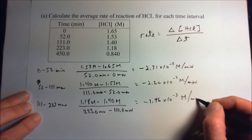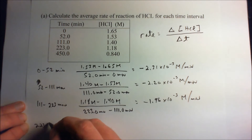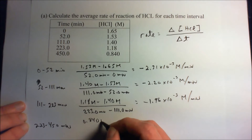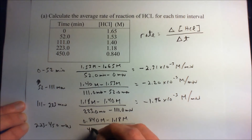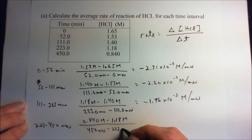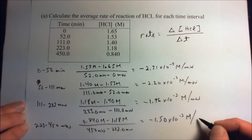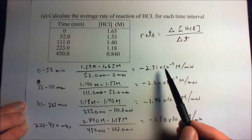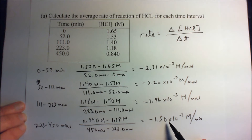Our final interval is 223 minutes to 450 minutes: 0.840 molarity minus 1.18 molarity divided by 450 minutes minus 223 minutes, and that gives us minus 1.50 times 10 to the minus third molarity per minute. As you can see, the rate drops as the reaction proceeds, just like what we'd expect — the initial reaction is going to be much faster than the reaction nearing completion or equilibrium.